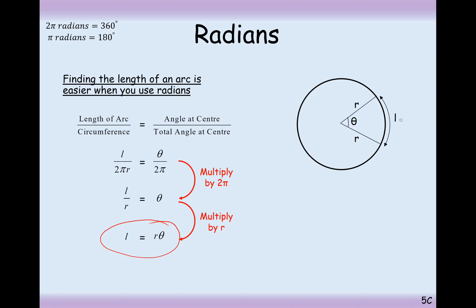The length of this line here is just equal to r the radius times theta when theta is in radians mode.